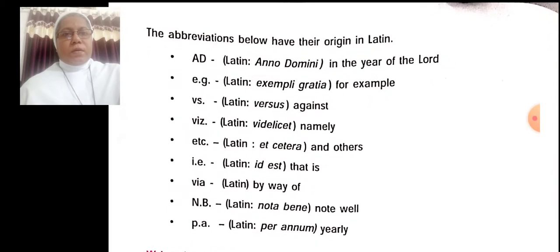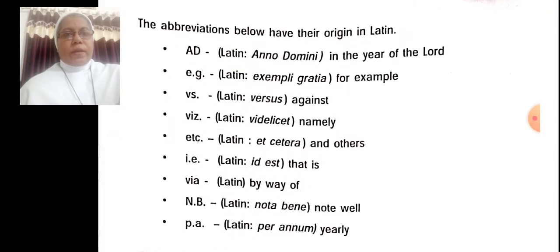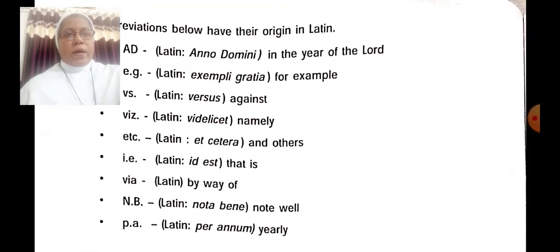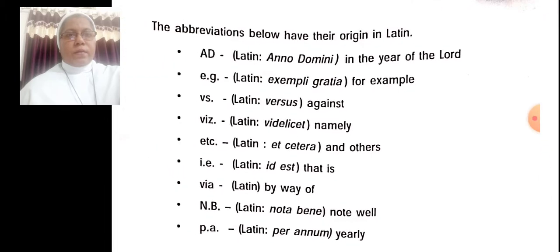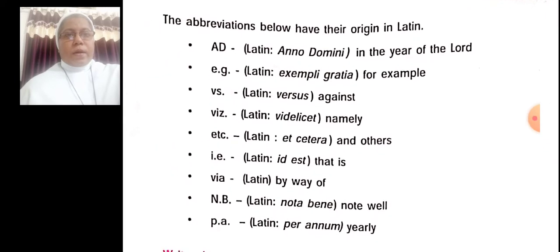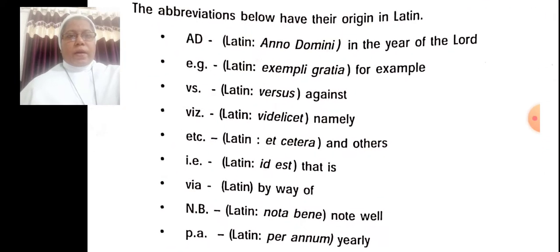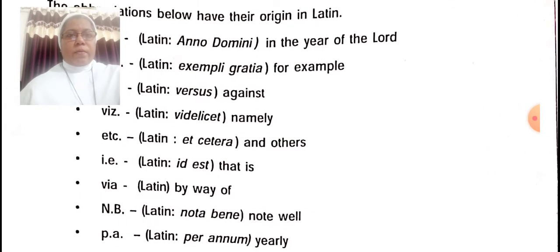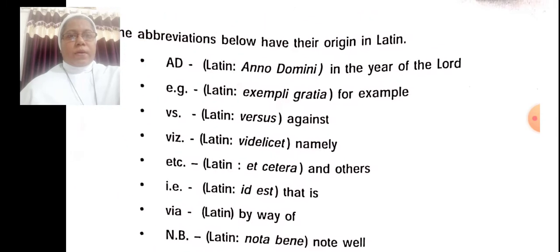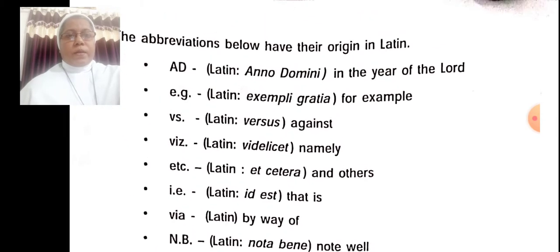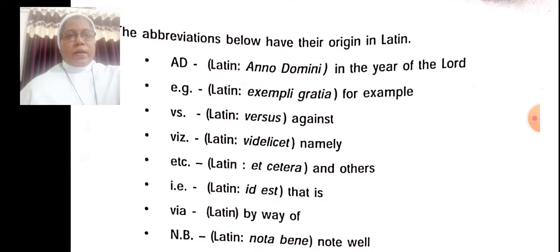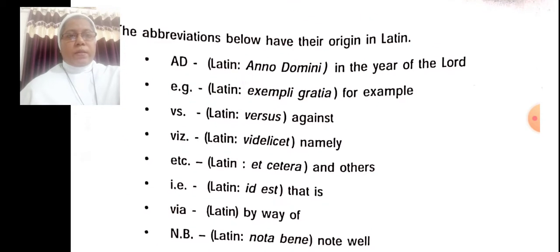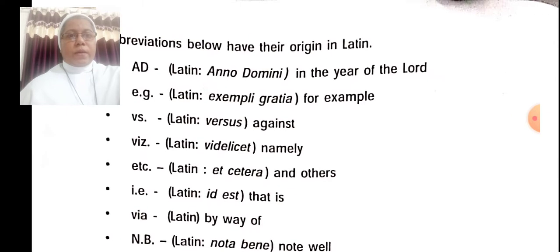The abbreviations below have their origin in Latin. A.D. — Latin Anno Domini — in the year of the Lord. E.G. — Latin Exempli Gratia — for example.